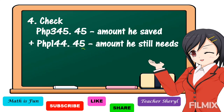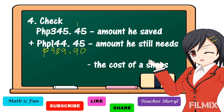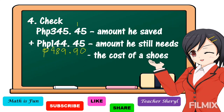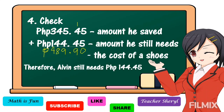5 plus 5 is equal to 10. Write 0, regroup 1. 1 plus 4 plus 4 is equal to 9. Copy the decimal point. 5 plus 4 is equal to 9. 4 plus 4 is equal to 8. And 3 plus 1 is equal to 4. We put the peso sign. The result is 489 pesos and 90 centavos, which is the cost of the shoes. Therefore, Alvin still needs 144 pesos and 45 centavos to buy the shoes.